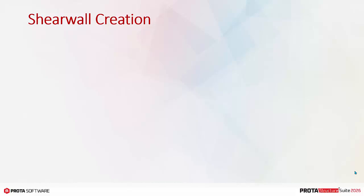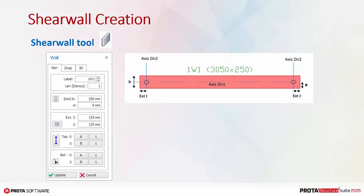Shear Wall Creation. To create a Shear Wall, click on the Shear Wall tool. A Shear Wall requires two insertion points or nodes. These insertion points are created by intersection of axes. Hence, three axes are required to create a wall.